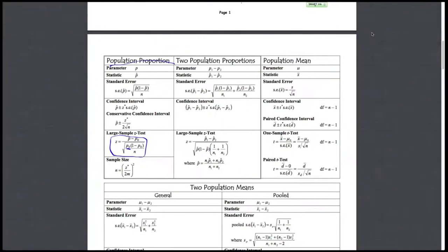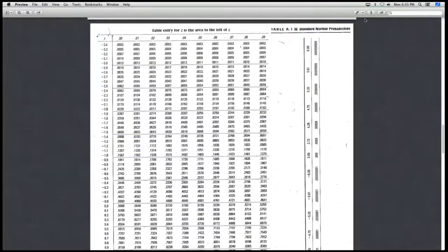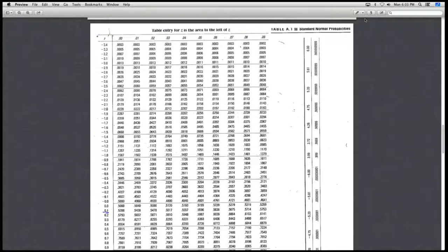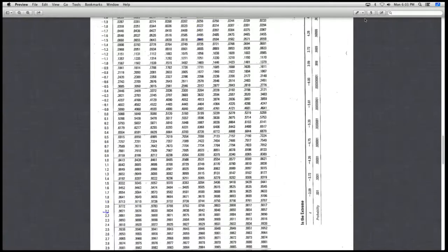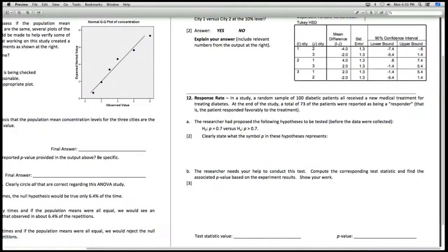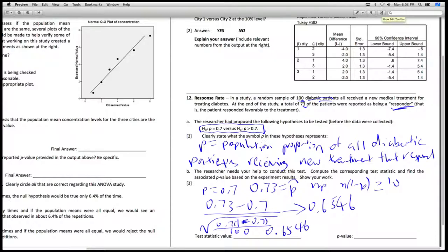And our p-value is, how do we find that out? We go to the table, and we want 0.6546. So 0.6 and 0.5 around there. And we get probably actually around this value, 0.7422. So the p-value is, but that's for...